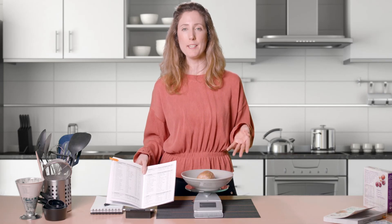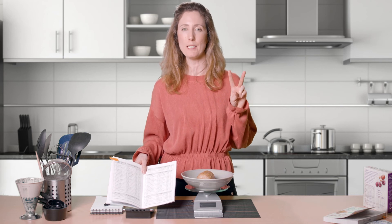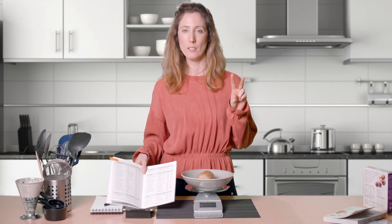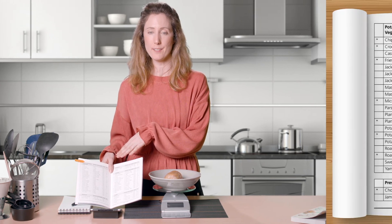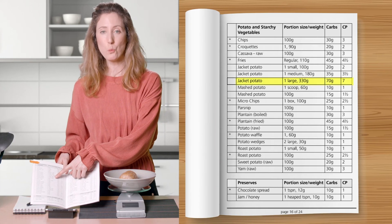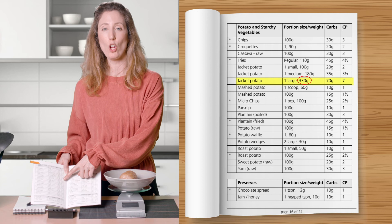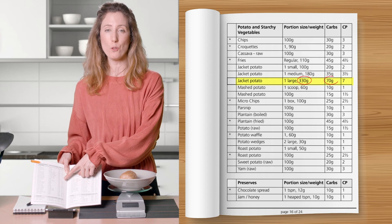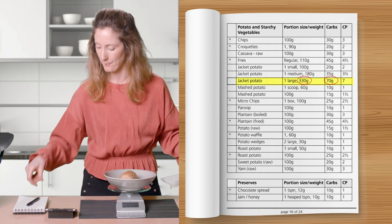So now that we know the weight of my potato I need two more pieces of information to do the calculation. I'm going to use the carbohydrate portion list. I need the weight of the potato and the carbohydrate in that weight. So now I'm going to do the maths.